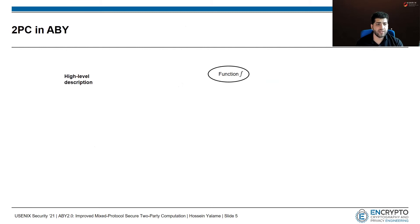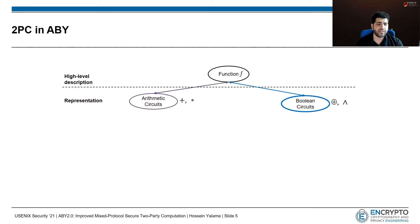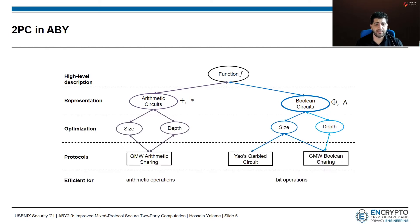In general, in ABY, you have a high-level description of some function. Then your function should be represented as arithmetic circuits or Boolean circuits. For arithmetic circuits, you should use GMW arithmetic sharing. And for Boolean circuits, you should use Yao's Garbled circuits or GMW Boolean sharing.